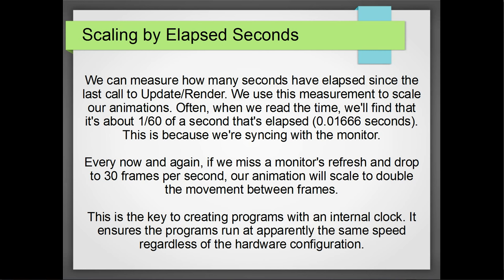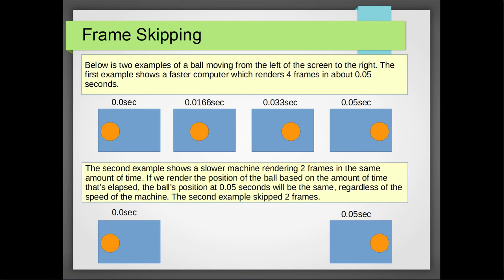Every now and again, if we miss the monitor's refresh rate and drop back to 30 frames per second, we want the animation to double the movement between frames. This is really the key to creating programs that run at the same speed no matter what the hardware is — it all comes down to frame skipping. A fast computer running four frames moves the ball from the left to the right of the screen. A slower computer only displaying two frames can still calculate and move the ball to exactly the same place in the same amount of time. The animation looks a little choppier on the slow computer, but it's essentially running at the same speed.